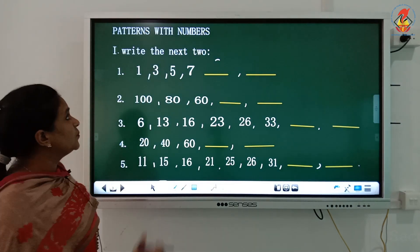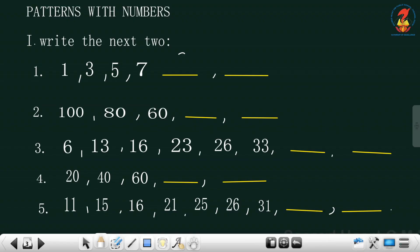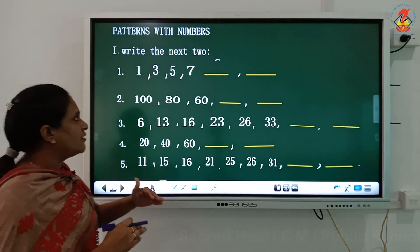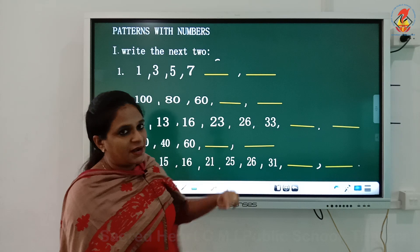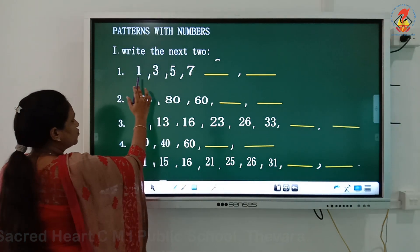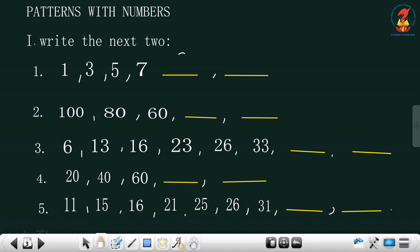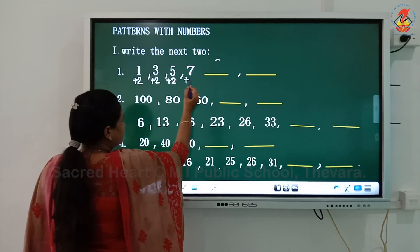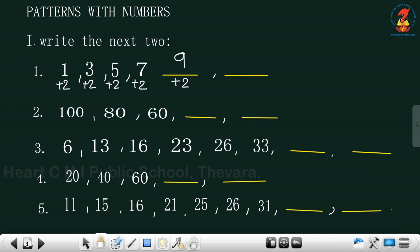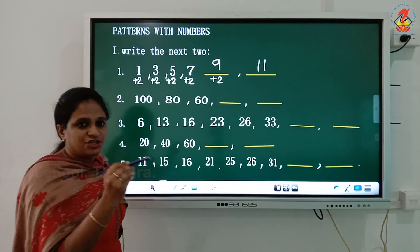Let's look at questions with number patterns. Question 1: write the next two numbers. A series of numbers is given; follow the pattern and write the next two numbers. The number given is 1, 3, 5, 7 - in increasing order. Let's add and see: from 1 to 3 is plus 2, from 3 to 5 is plus 2. So the pattern follows adding 2. Five plus 2 is 7, seven plus 2 is 9, nine plus 2 is 11.